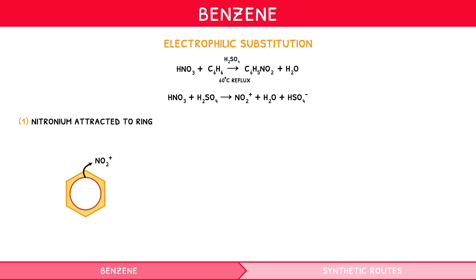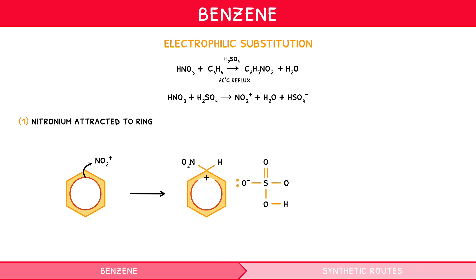The second stage of drawing the mechanism involves redrawing the displayed formula of benzene, showing itself as a carbocation with a broken delocalised ring and positive charge, the nitrate group attached via a dative bond, and a hydrogen atom on the same carbon as the nitrate group, which has always been present. Beside this we draw the HSO4− ion, with a lone pair on the top oxygen, labelled with a negative charge.